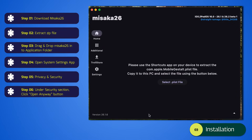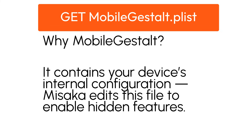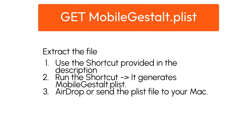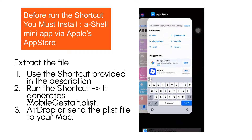Step 3: Get your device's Mobile Gestalt file. Masaka 26 needs the original MobileGestalt.plist from your device as a template. It contains your device's internal configuration, and Masaka edits this file to enable hidden features. To extract the file: use the shortcut provided in the description — the Mobile Gestalt Extractor shortcut. Run the shortcut; it generates MobileGestalt.plist. Then AirDrop or send the plist file to your Mac.